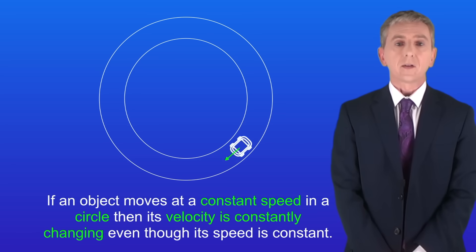So the key fact is that if an object moves at a constant speed in a circle then its velocity is constantly changing even though its speed is constant.